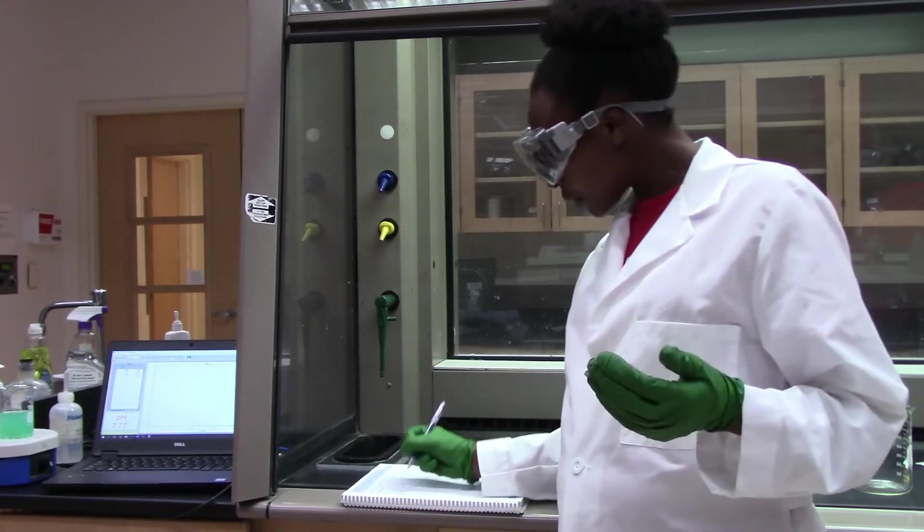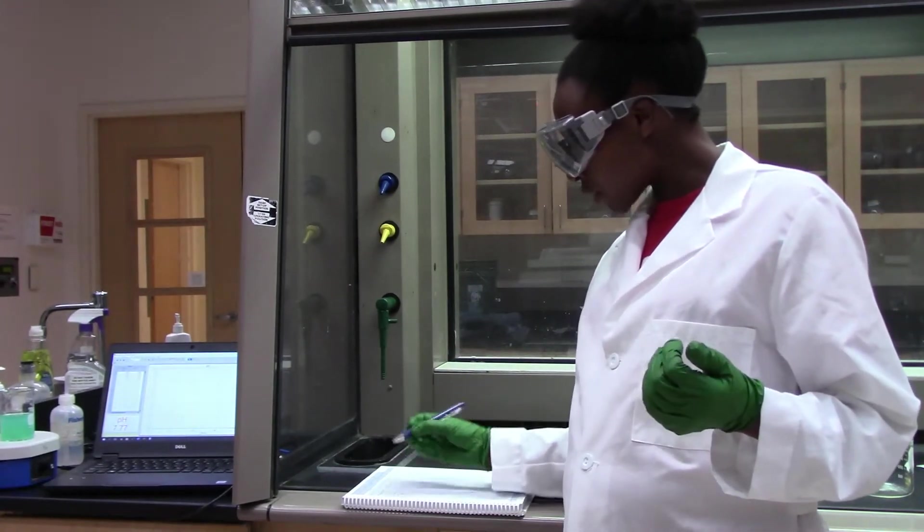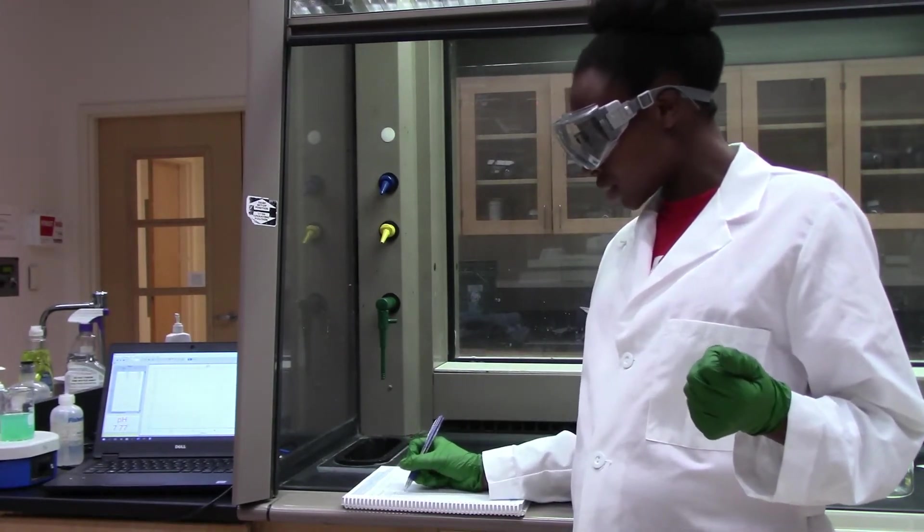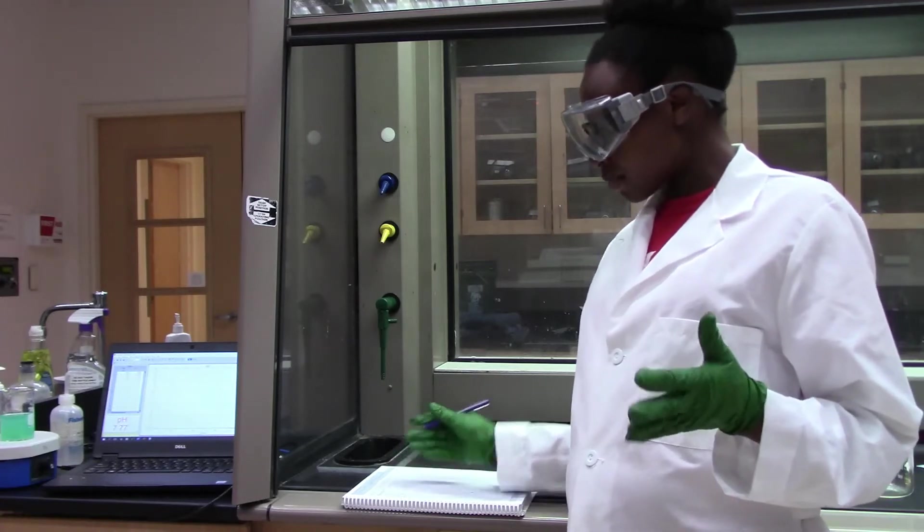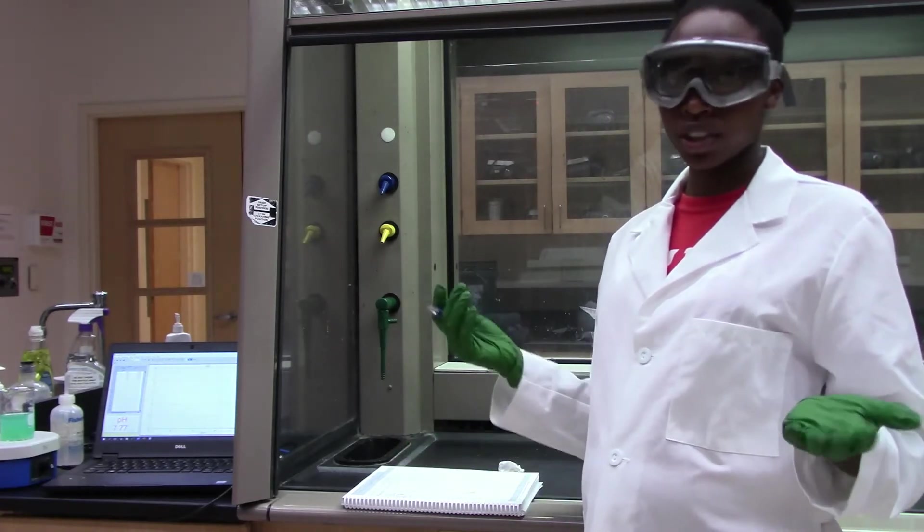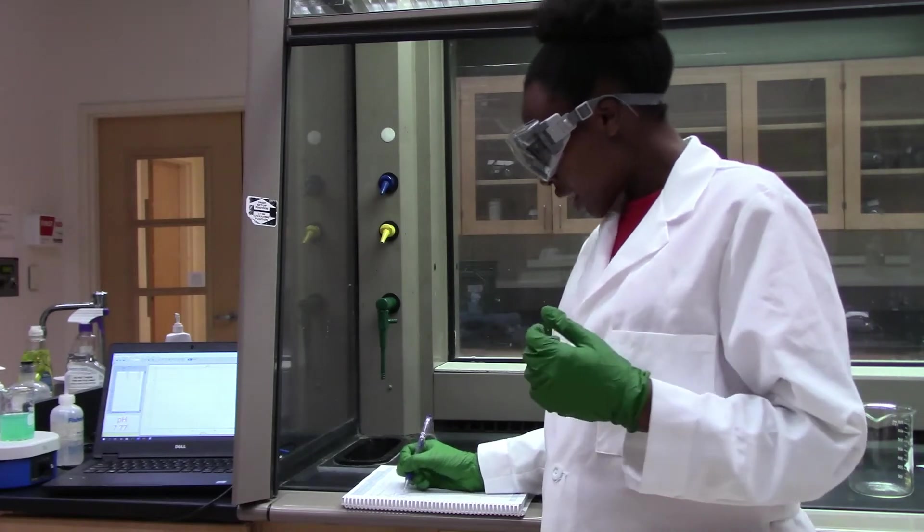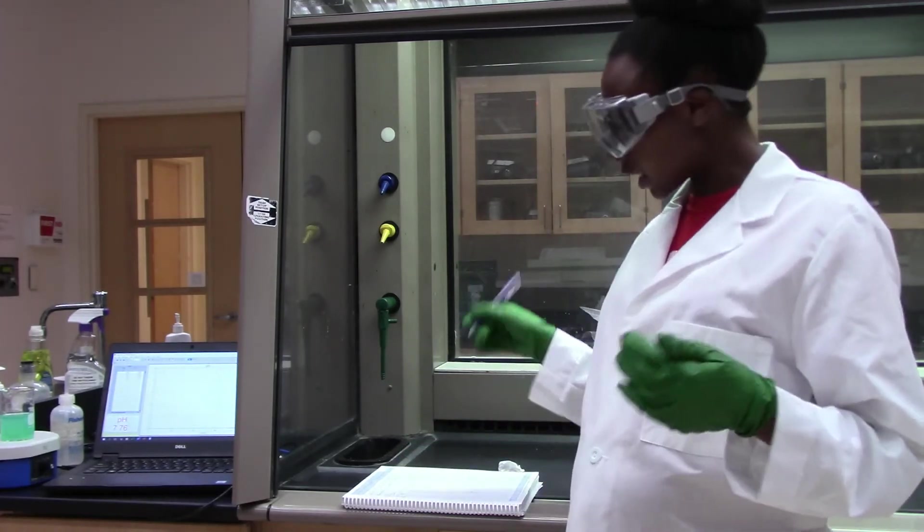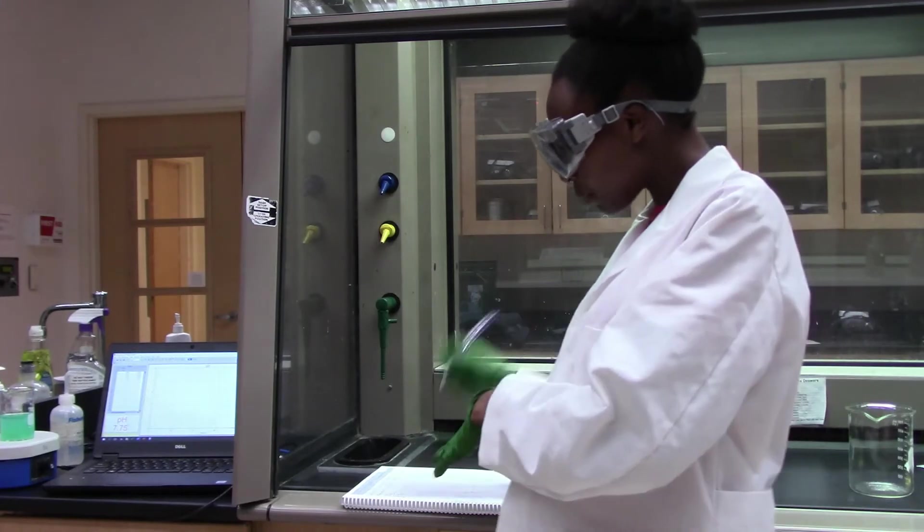My initial pH reading is 0.26 units. This is before I add any sodium hydroxide. Therefore, I will add 10 drops and take the pH measurements and record them in my notebook.